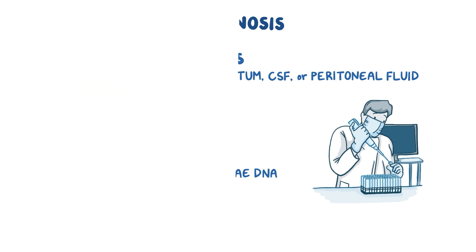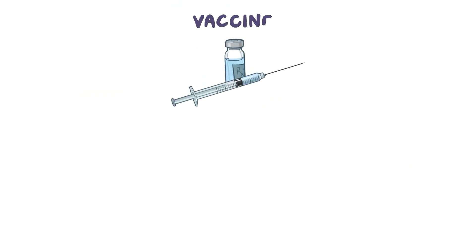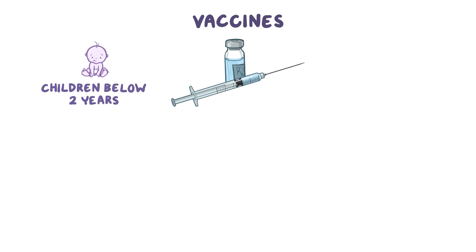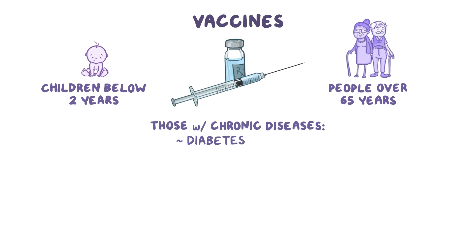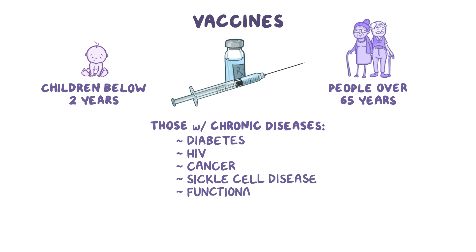Individuals at risk for a strep pneumoniae infection should get vaccinated. This includes young children below 2 years and older people above 65 years. Other high-risk groups include those with chronic diseases like diabetes, HIV, cancer, and most importantly, those with sickle cell disease and those with functional asplenia.